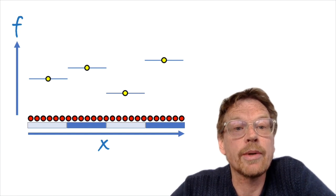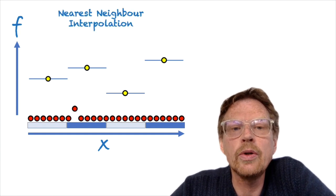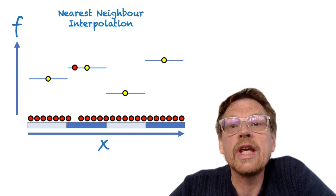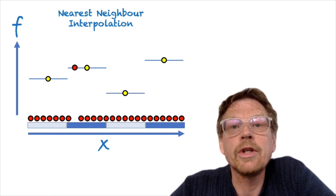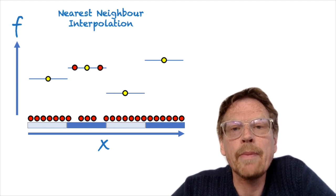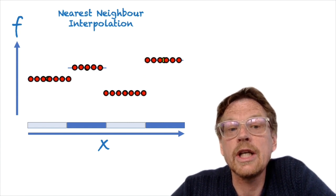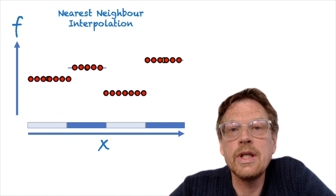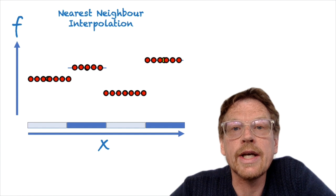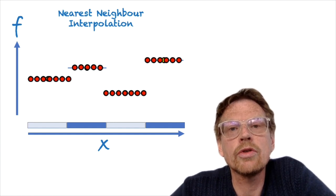The first interpolation method I'm going to discuss is nearest neighbor. If we take one of these points as an example, we map it to the nearest grid box value from the original dataset. We have remapped all of these points onto the value of the nearest neighbor. So what we can see straight away is when we use nearest neighbor interpolation, even though we're remapping to a finer grid, the data will retain its original coarse looking structure.